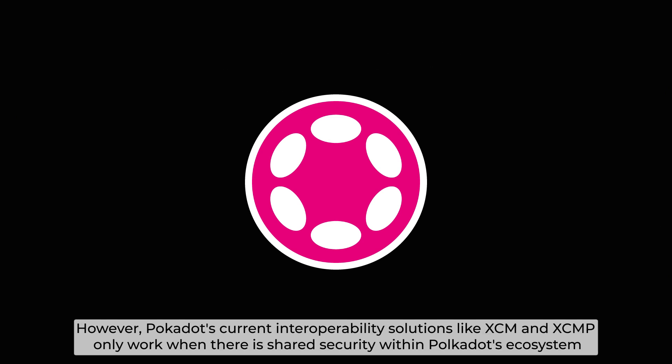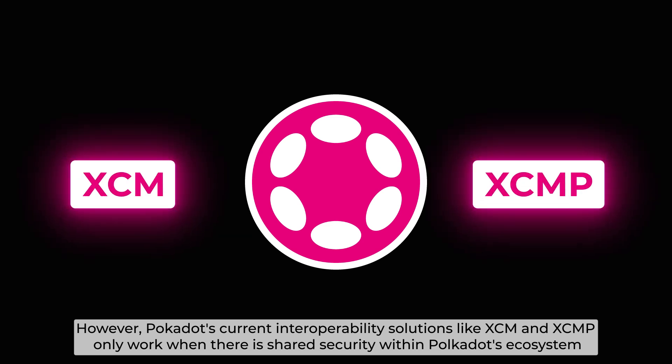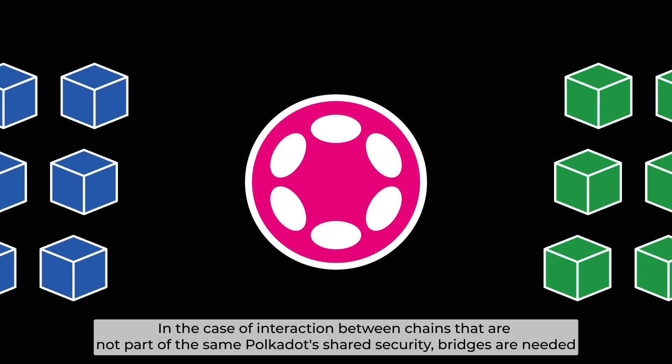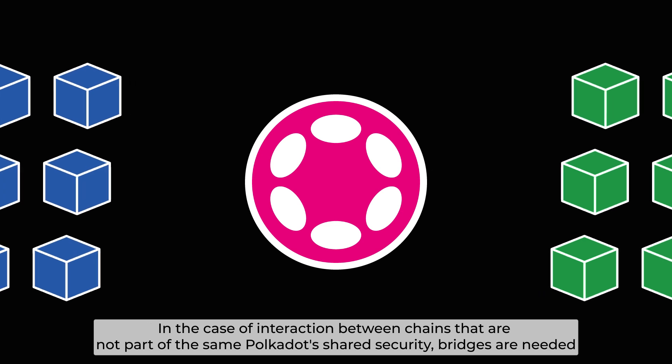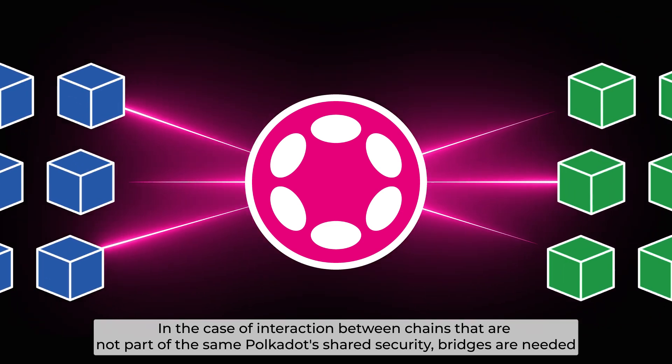However, Polkadot's current interoperability solutions like XCM and XCMP only work when there is shared security within Polkadot's ecosystem. In the case of interaction between chains that are not part of the same Polkadot's shared security, bridges are needed.